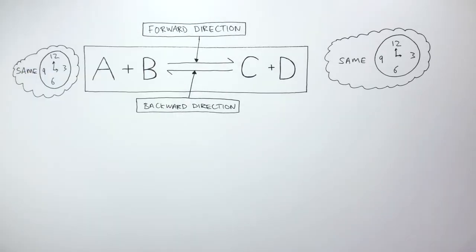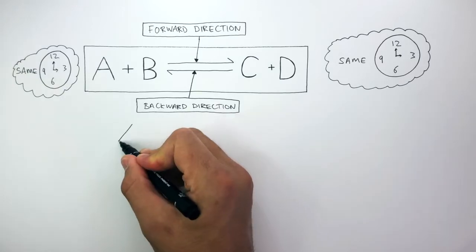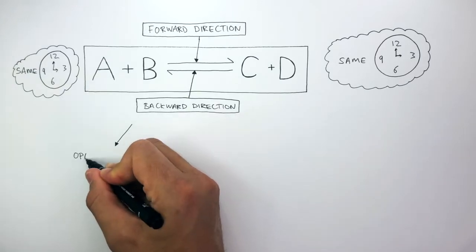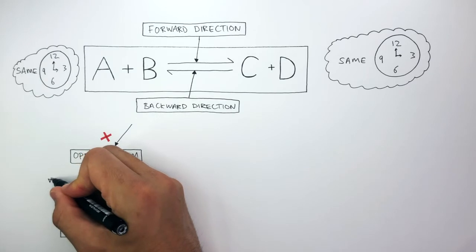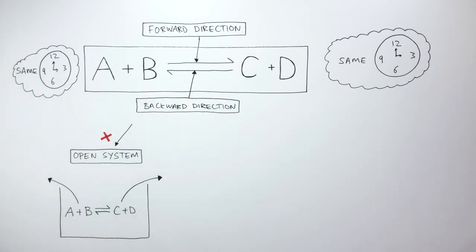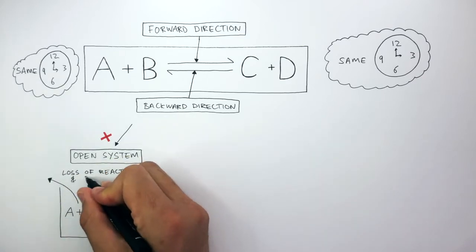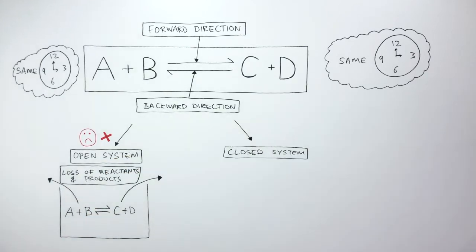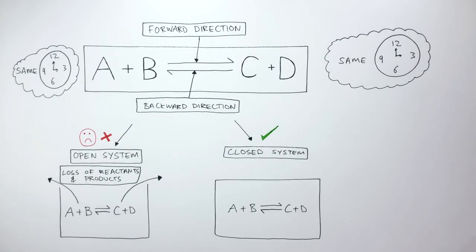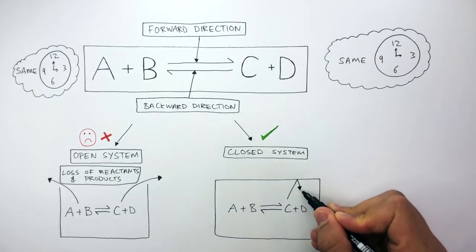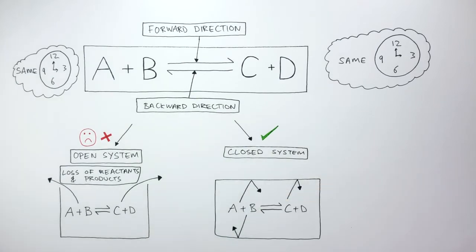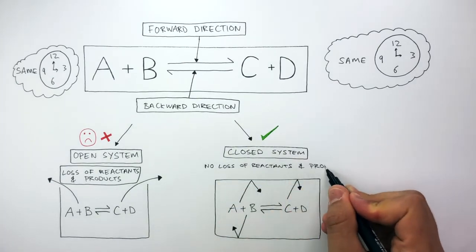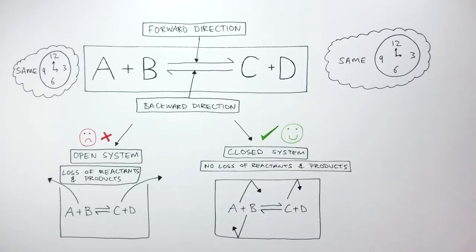Reversible reactions do not take place in open systems. This is where there can be a loss of reactants or products, because the container is open to the surroundings. Closed systems are better for reversible reactions, as the reactants and products cannot escape. There is no loss of reactants and products in a closed system.